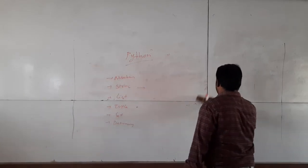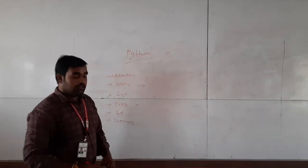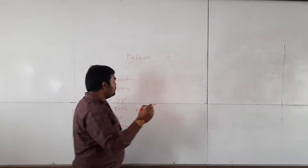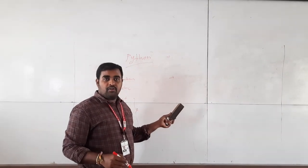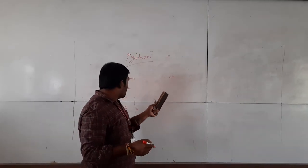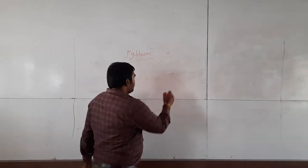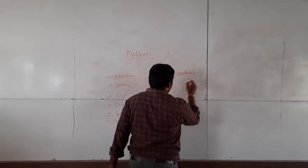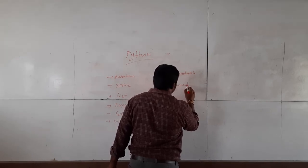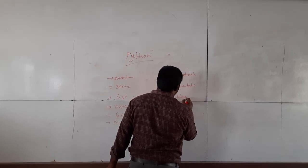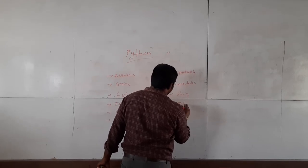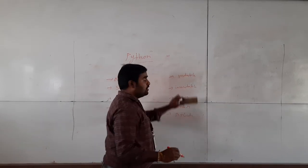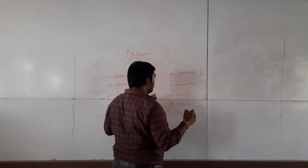The next data type is list. Before going to introduce these data types, I will give a small introduction about what is mutable, what is immutable, what is ordered, what is unordered, and the slicing and duplicate concepts. Once you know these keywords, I will explain the remaining data types.